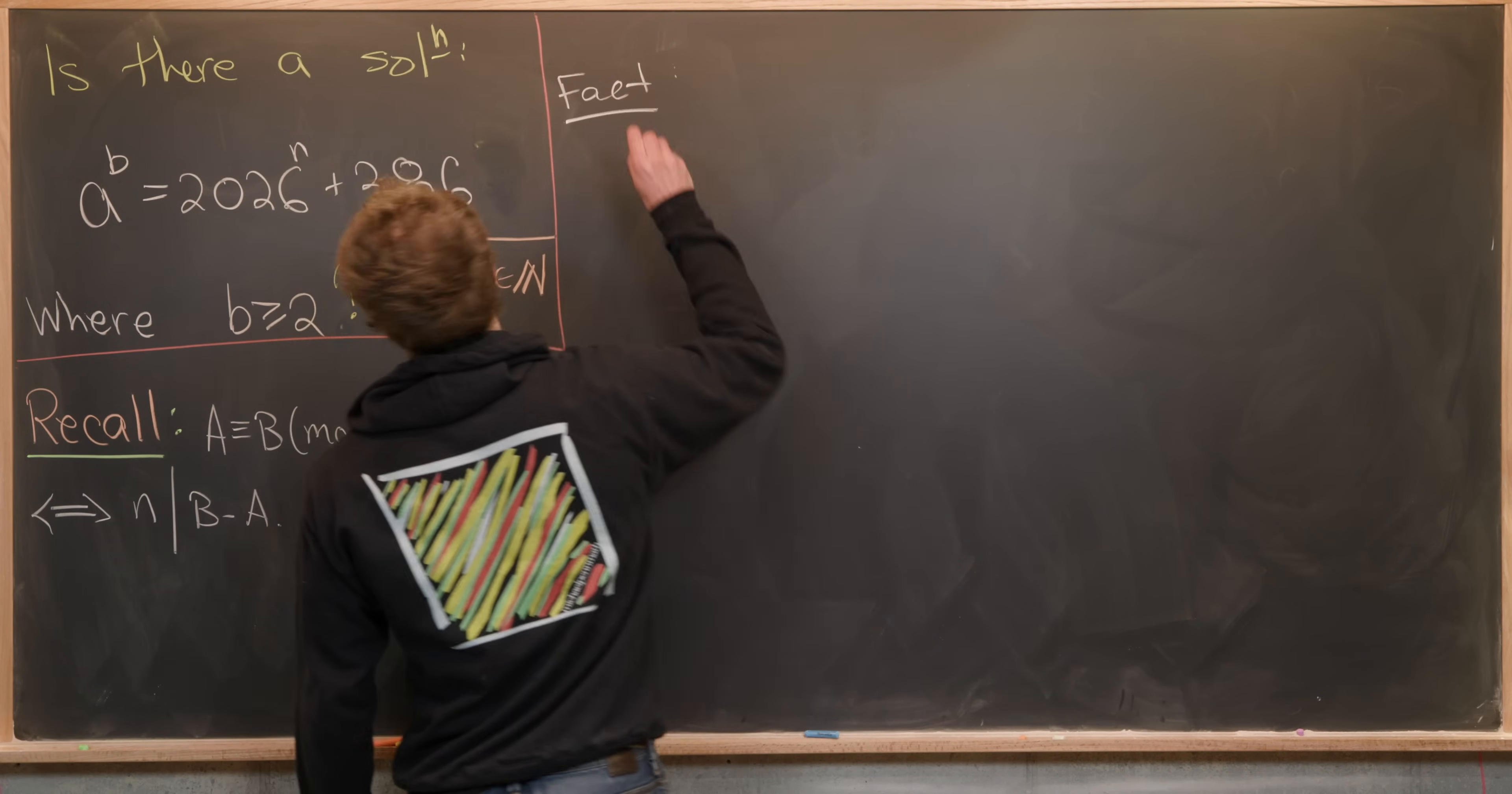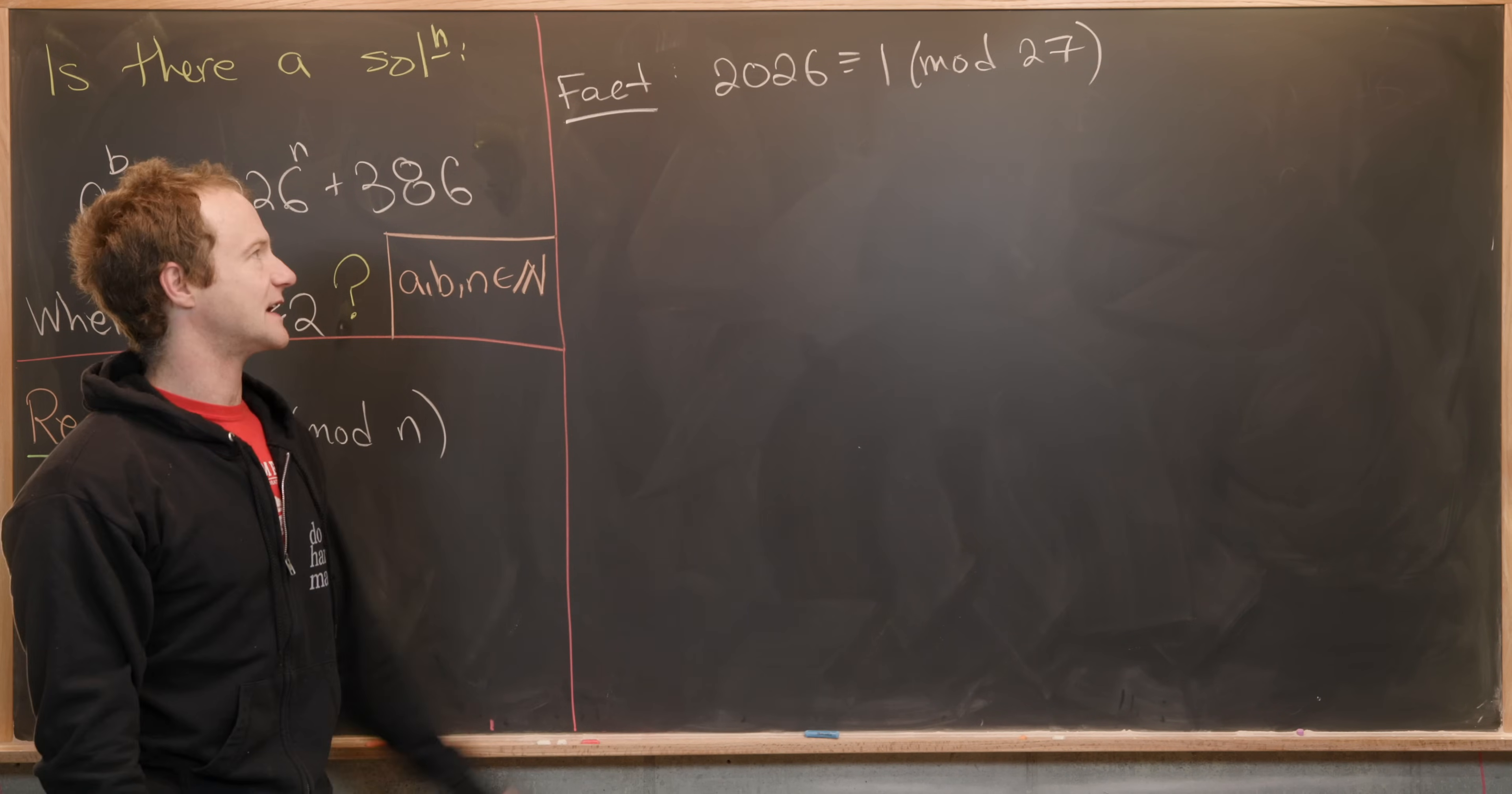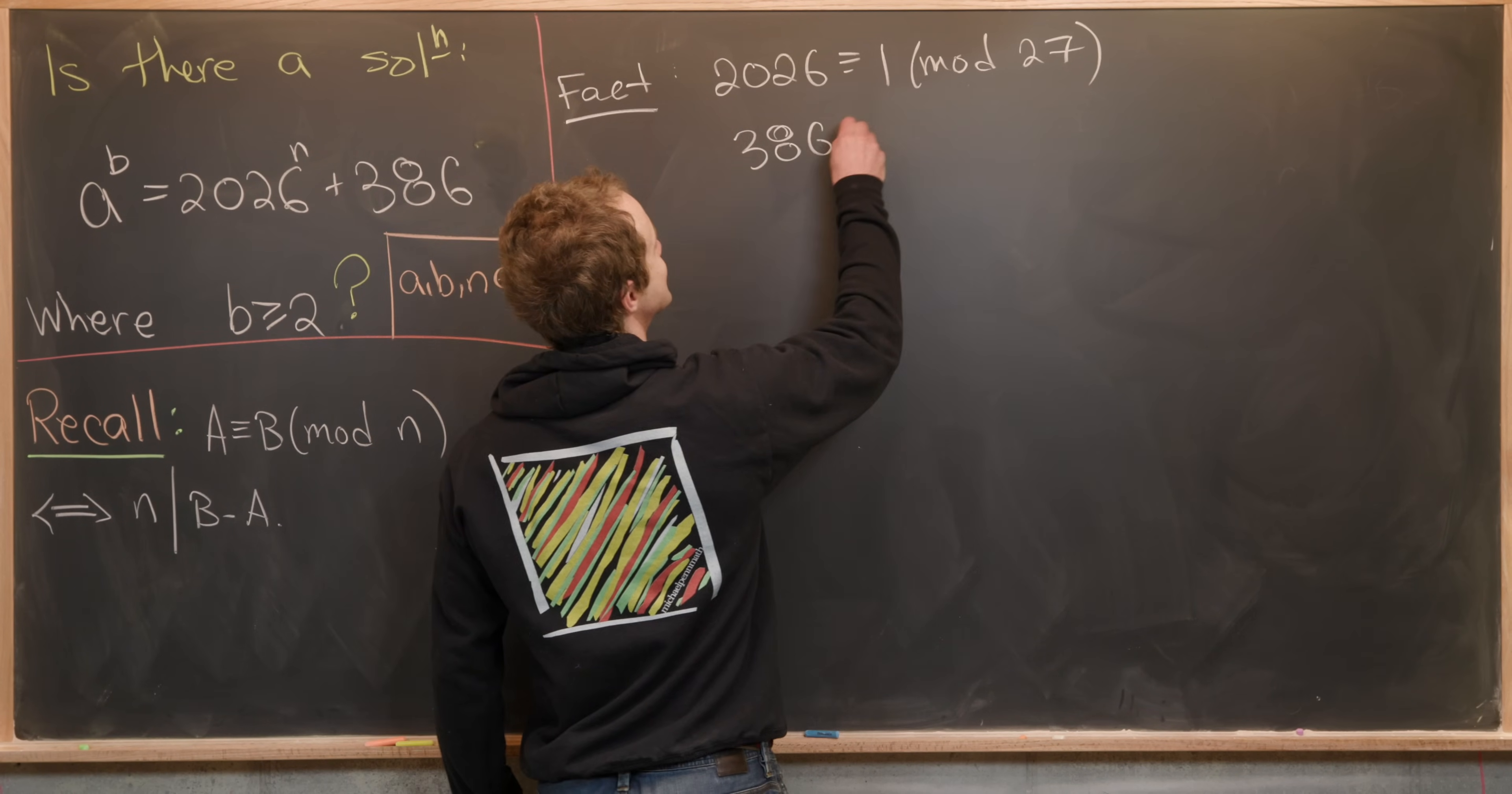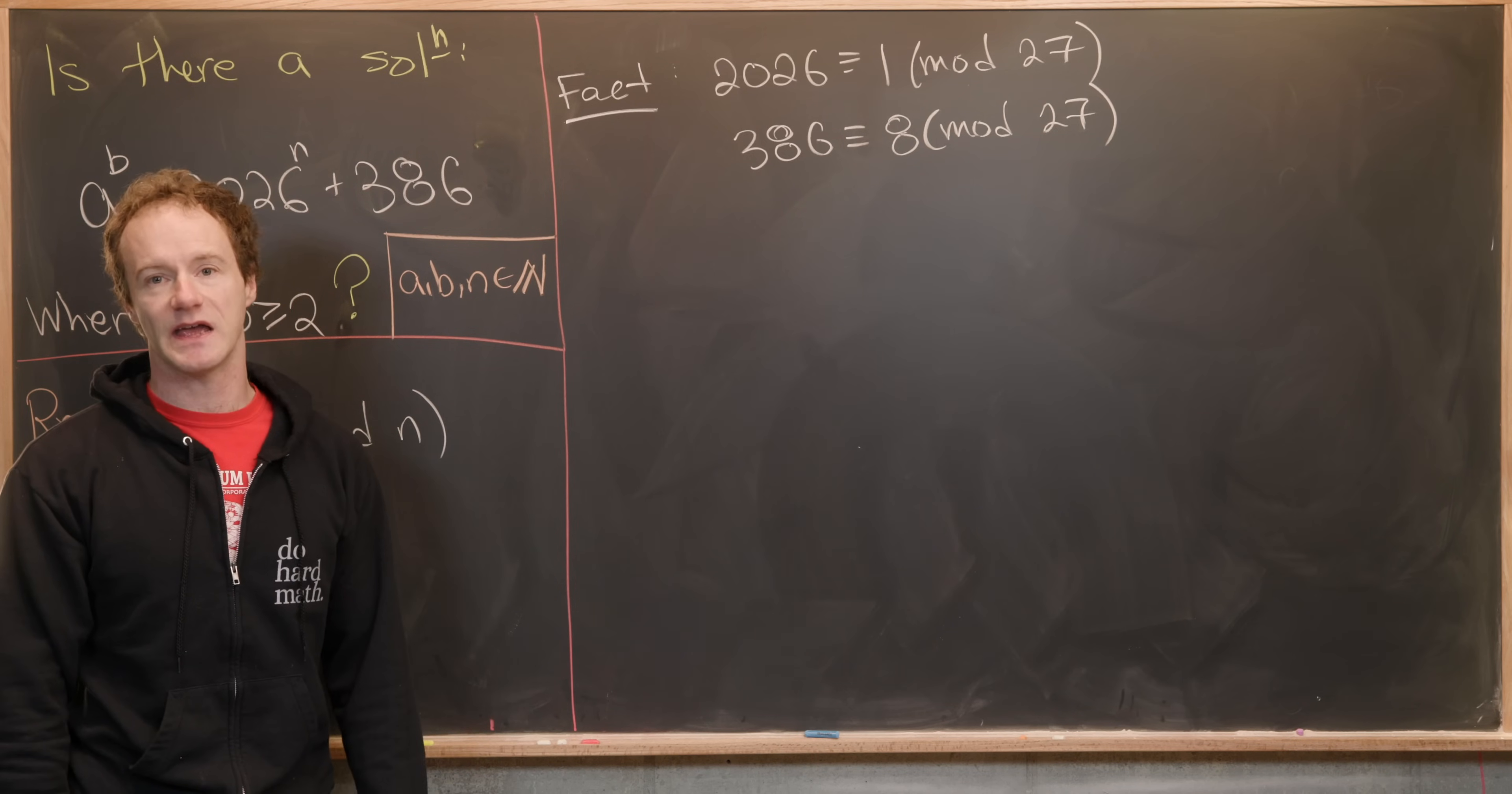And I'm claiming that 2026 ≡ 1 (mod 27). So you can check that by dividing 27 into 2026 and noticing you get a remainder of 1. Furthermore 386 ≡ 8 (mod 27). Again you would figure that out by dividing 27 into 386 and getting a remainder of 8.